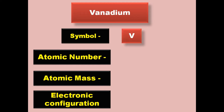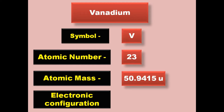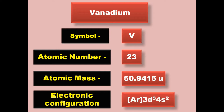Vanadium has symbol V, atomic number 23, atomic mass 50.9415, electronic configuration [Ar] 3d3 4s2. Vanadium is a transition metal and exists in solid form at room temperature.